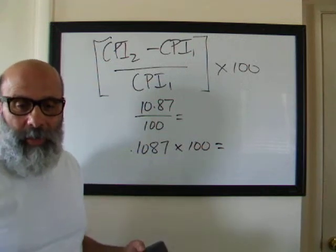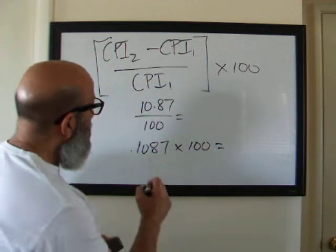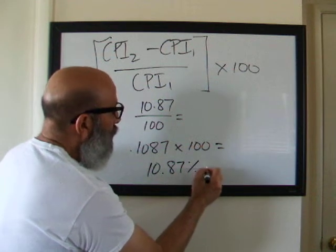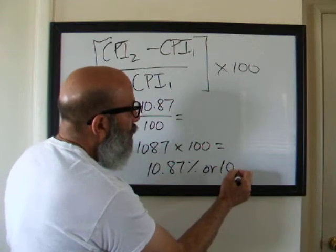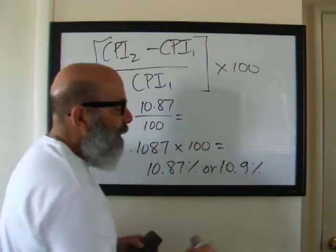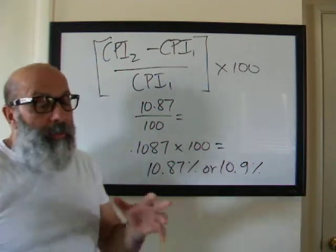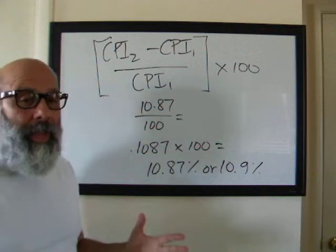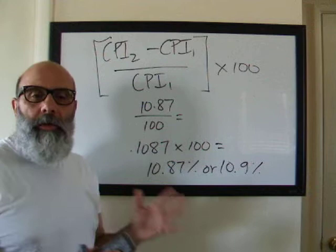So my actual inflation rate is going to be about 10.87 percent or we could even round it up to just 10.9 percent. So that's inflation, so that means in this example prices went up almost 11 percent between 2018 and 2019.